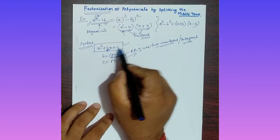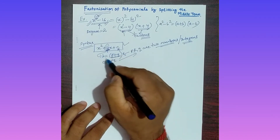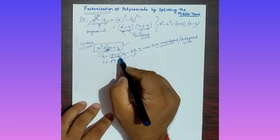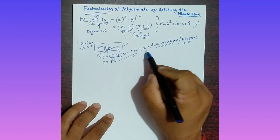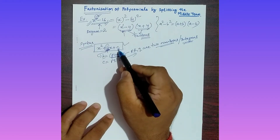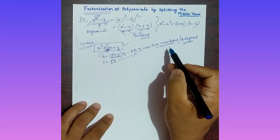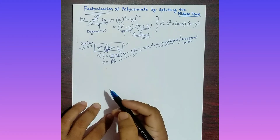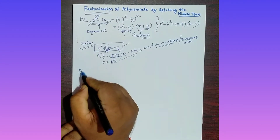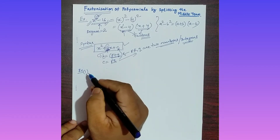This is the basic syntax to remember: x² + bx + c. The middle term bx is what you have to split — into two parts whose sum equals b and whose product equals c. Let me give you one simple example so you can easily understand.